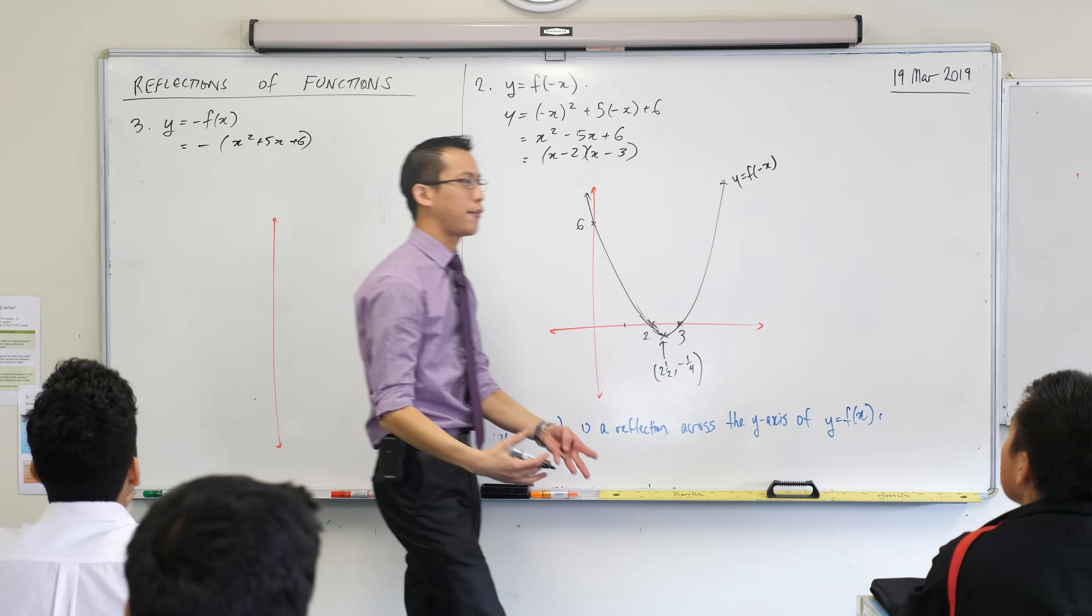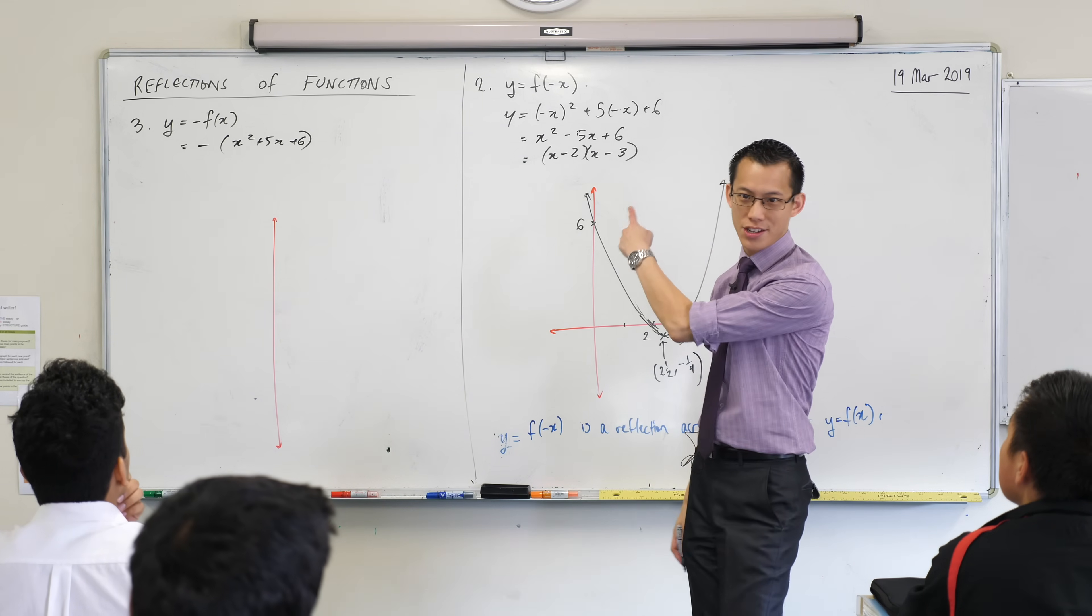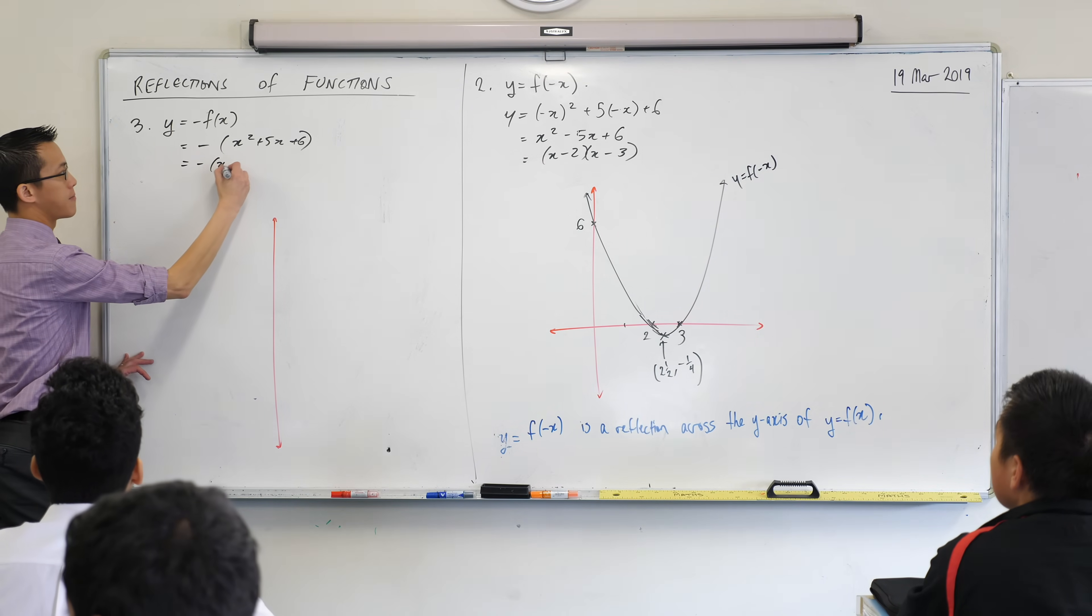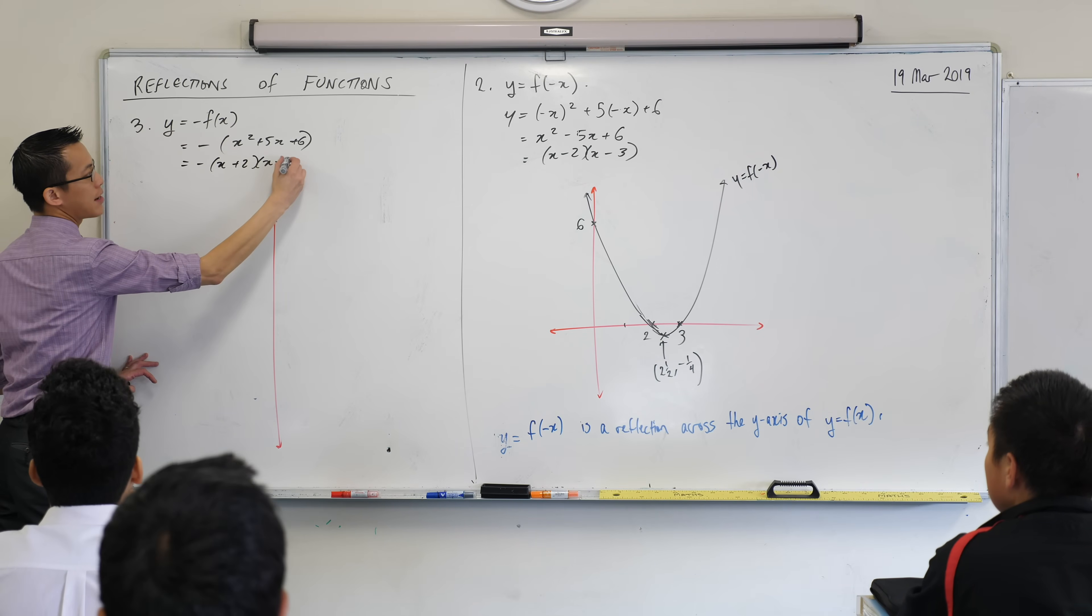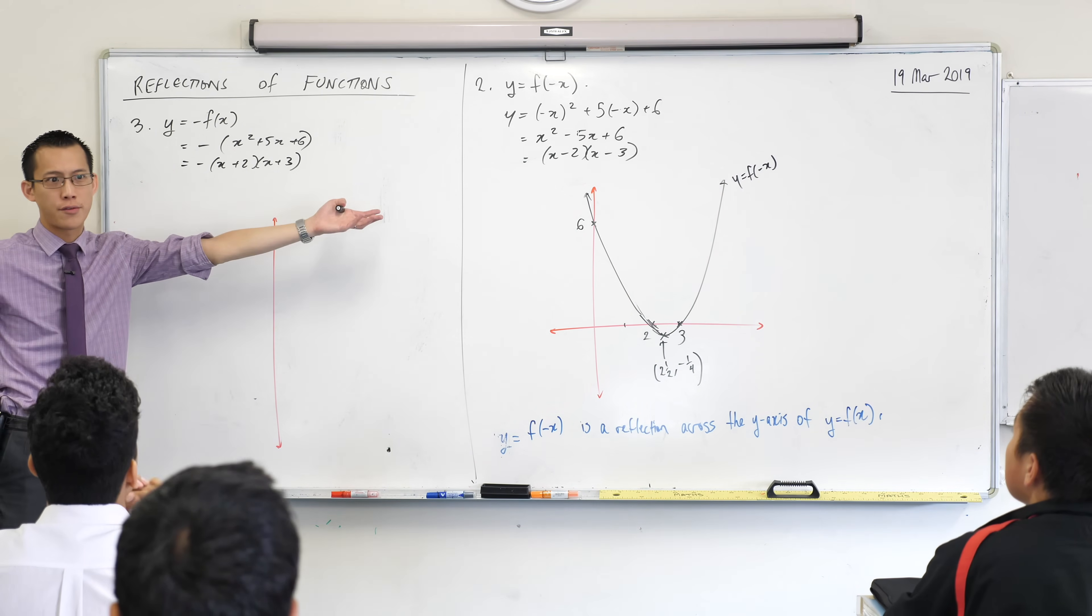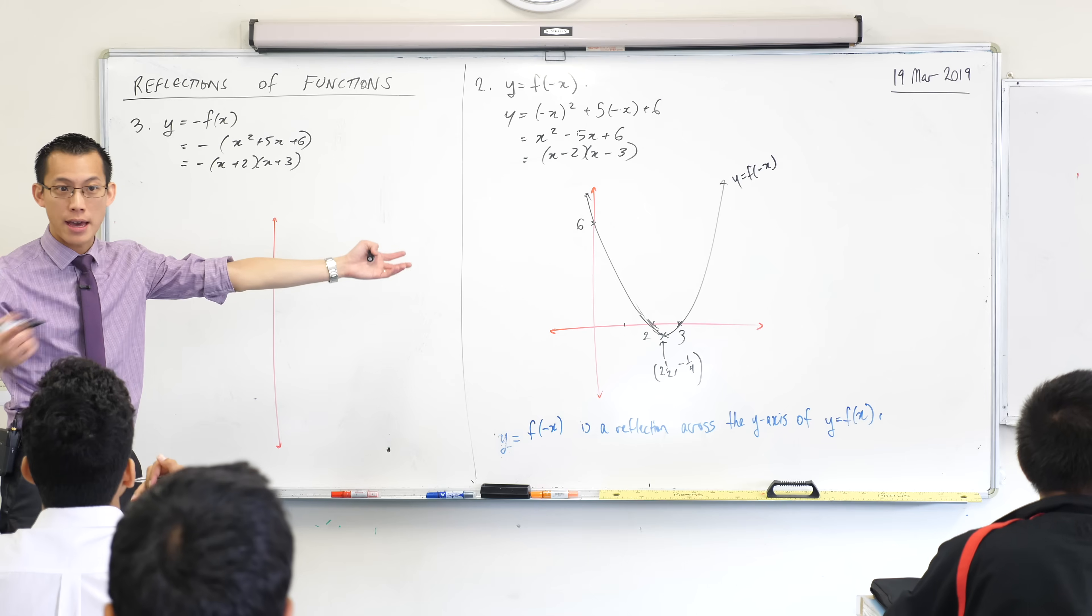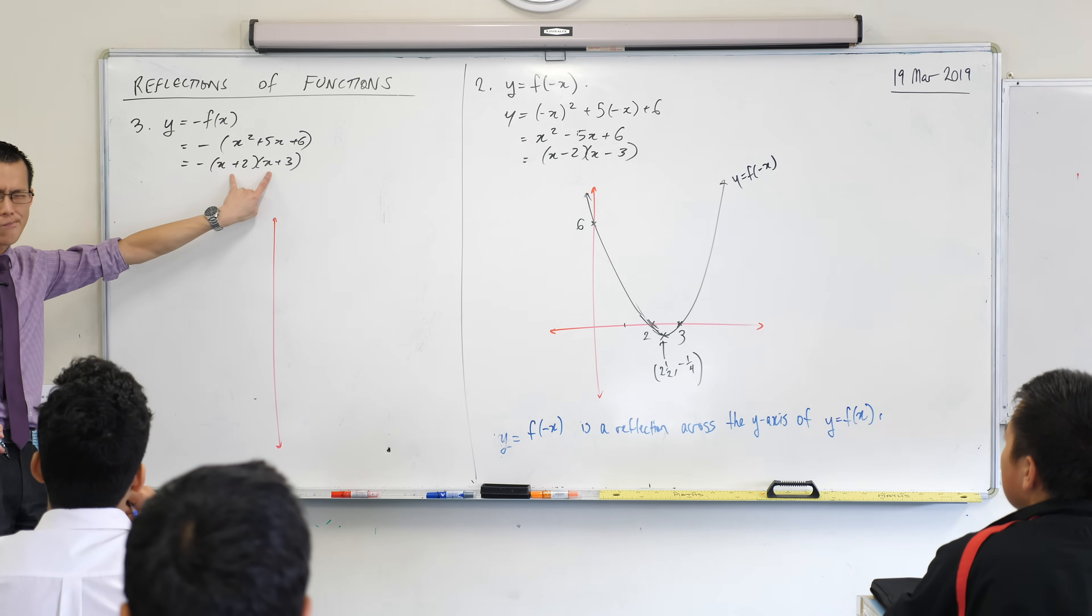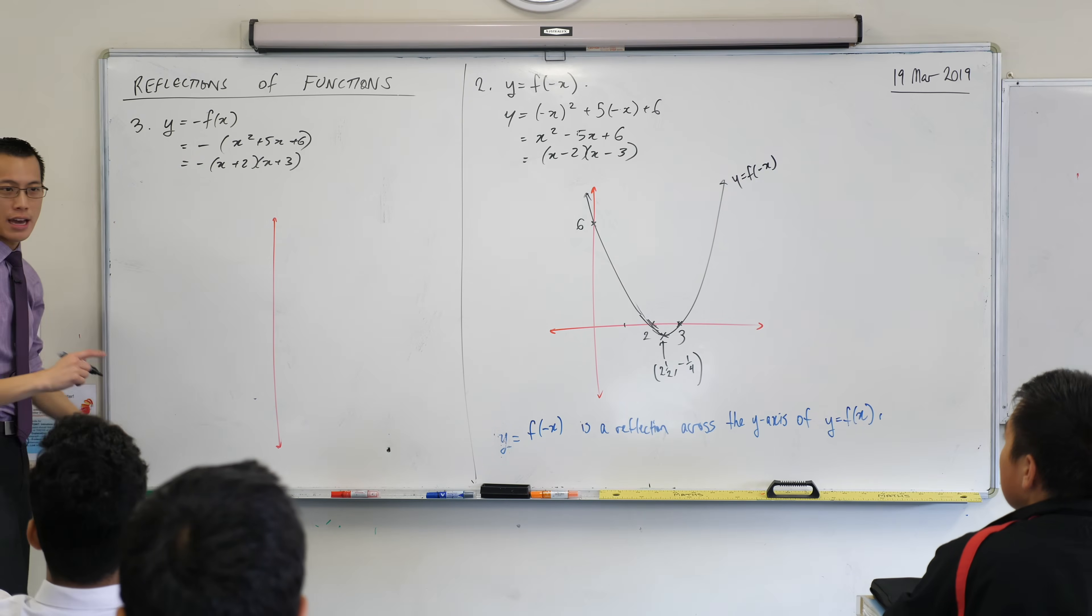Now, we've already factorized this. What's the factorization of that thing on the inside? x plus 2, x plus 3. So what does this factorization tell you? What did it tell us before? Why did we factorize? Why did we ever factorize? So we can find the x intercepts. What are the x intercepts? Negative 2, negative 3.